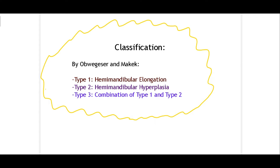The most widely used classification for defining different types of condylar hyperplasia is defined by Obiezer and Macaque. It includes Type 1: hemimandibular elongation, Type 2: hemimandibular hyperplasia, and Type 3: a combination of Types 1 and 2. We'll talk about each of them in detail.